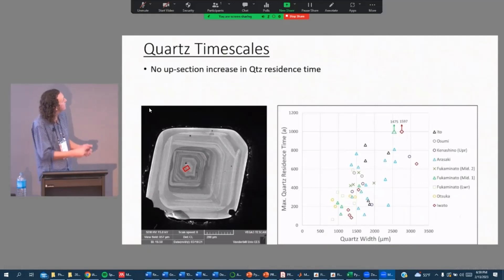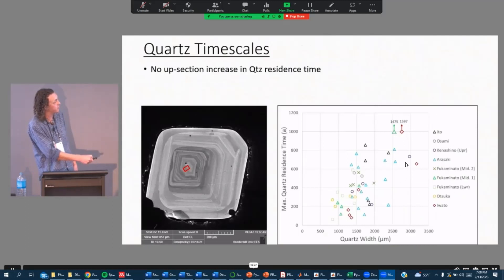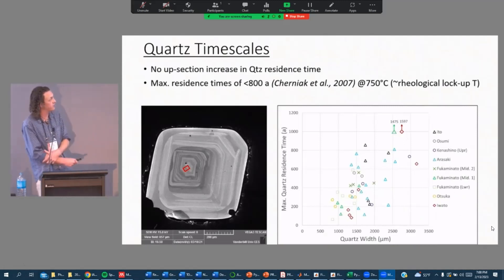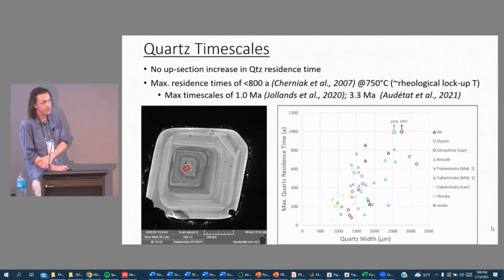When we plot up these results, we can see that there's no upsection increase in the quartz residence time. The caldera forming eruptions shown in the black and gray have similar timescales to the pre-caldera eruptions. If the Cherniak diffusivity is correct, then at 750 degrees Celsius, which according to rhyolite melts is about the rheological lockup temperature of these, then all quartz from all eruptions would have only been diffusing for about 800 years. But if we use the new Jollins et al diffusivity, we're looking at quartz that have been sitting around diffusing at 750 degrees Celsius for a million years. And if Audetat diffusivity is correct, then these quartz are sitting at 750 degrees Celsius for 3.3 million years.